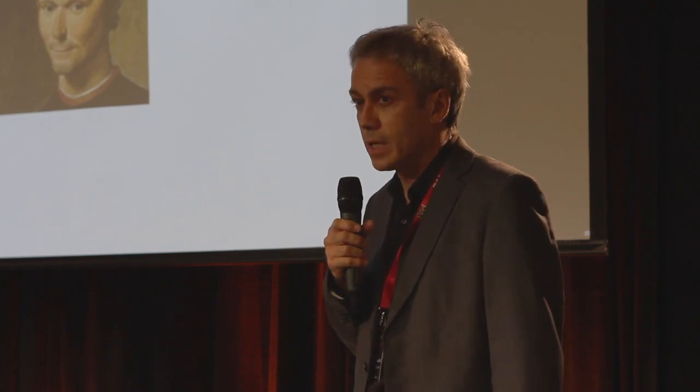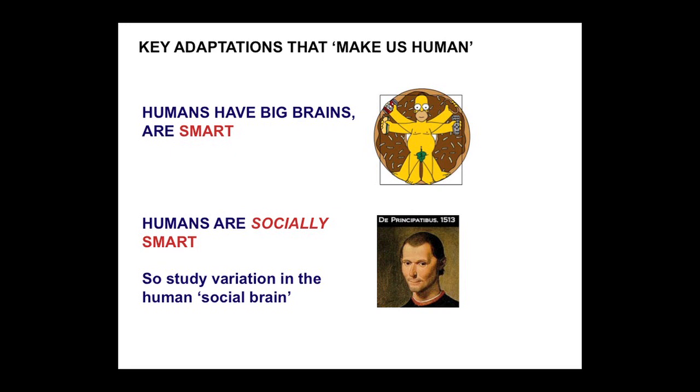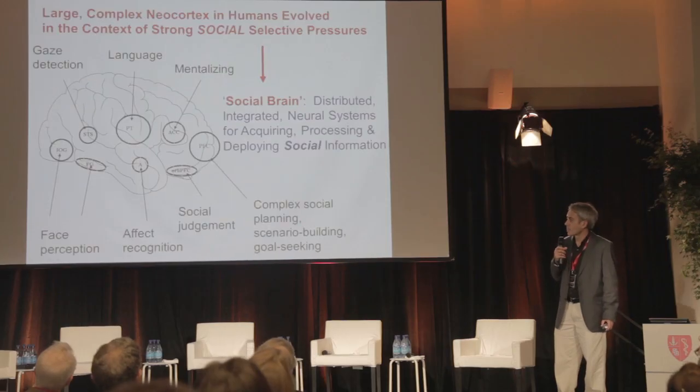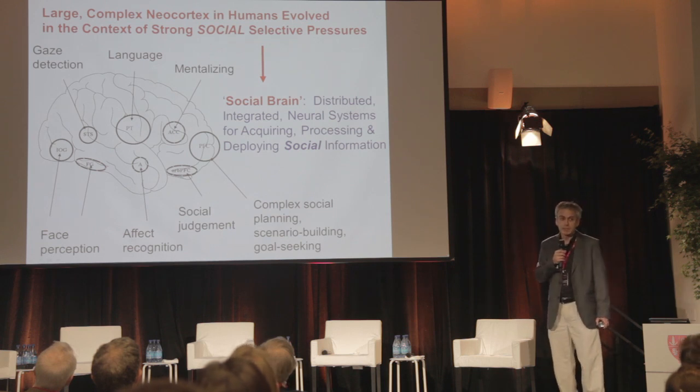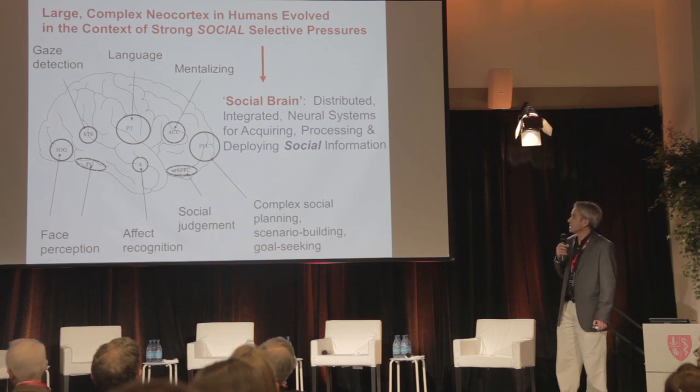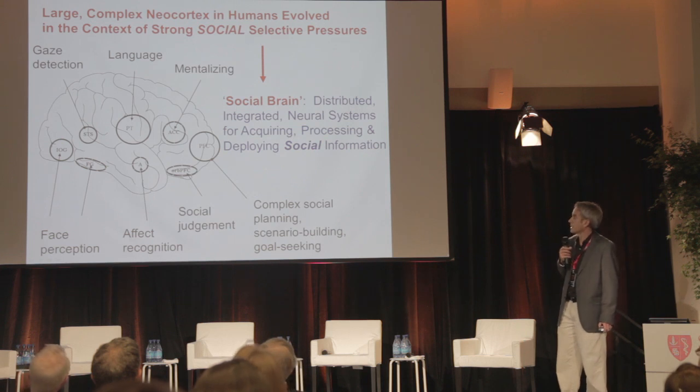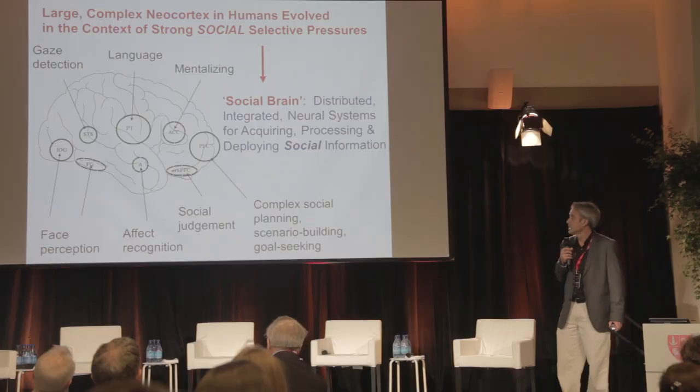One of the key adaptations that has made us human is that humans are smart — we have big brains. But we're not just smart in general; we are smart in a particular way: we are socially smart. We can study variation in what's called the social brain, which is the main adaptation of humans. A considerable body of evidence from comparative primatology, psychology, and neuroscience has told us that the large complex neocortex of humans has evolved mainly in the context of strong social selective pressures, giving rise to the social brain — the distributed integrated set of neural systems for acquiring, processing, and deploying specifically social information. This is the adaptation that has evolved specifically in humans over the past six million years.